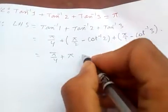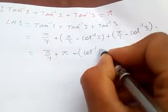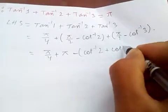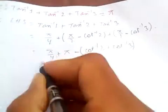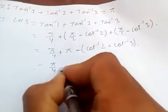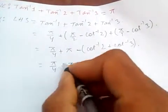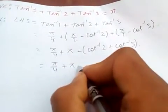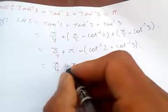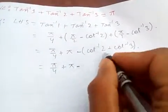Factoring out the minus sign, we get π/4 + π − [arccot(2) + arccot(3)]. Let's keep this and simplify further.